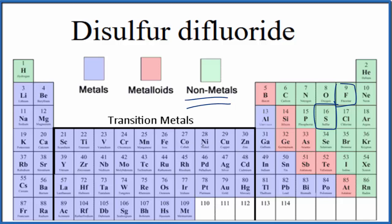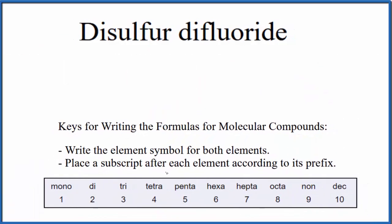And when we have two nonmetals, we have a molecular, also called a covalent compound. So to write the formula for this disulfur-difluoride, since it's a molecular compound, we'll use these rules here.